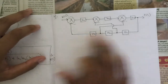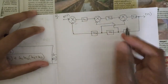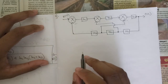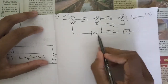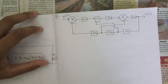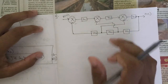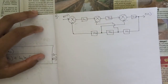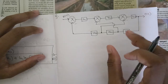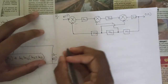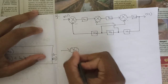Without wasting any time, let's try to solve this problem. First, in order to reduce the block, you can see that we have two takeoff points here. In order to make this simpler, we need to make some changes. I'll write that block here first, then I'll explain how those changes are happening.